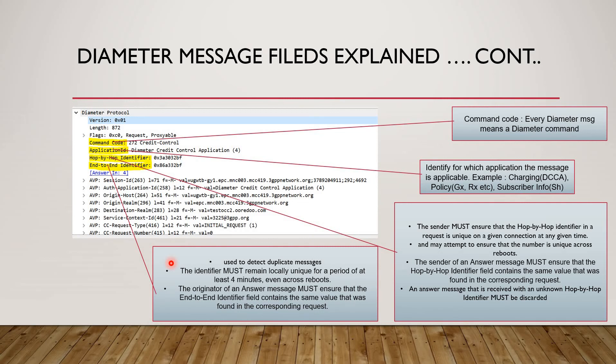It's a credit control request whose command code is 272. Why command codes are used? Because these are unique IDs for each command and it's easy to filter out requests from the Wireshark tool. As I showed you in the previous slides, I can even show you right now.